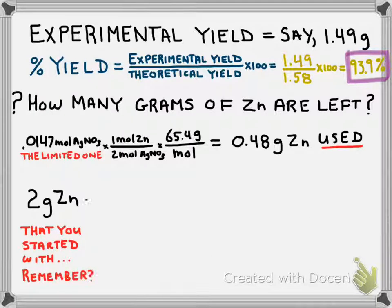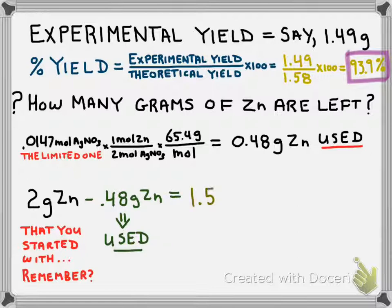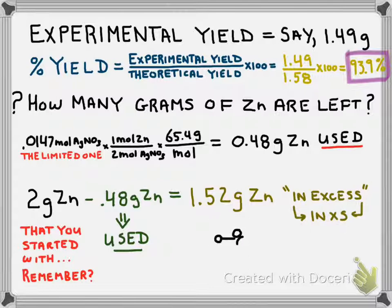So, if you go back, you might recall that we had 2 grams of zinc at the very beginning. Subtract from that the 0.48 grams of zinc that we used, and the remainder, then, is going to be equal to the grams of zinc that are left over or are called in excess. And, as an abbreviation, you might want to use in excess.